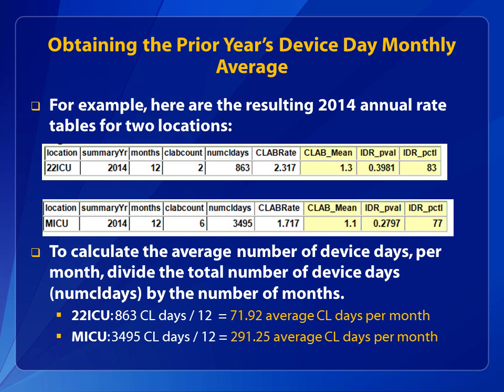For 22 ICU, the average number of monthly central line days for 2014 is 71.92. Since this is less than 75, the new denominator sampling protocol cannot be used. For MICU, the average number of monthly central line days for 2014 is 291.25. Since this is well above 75, the denominator sampling method for central line days can be used for this location.